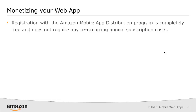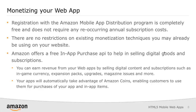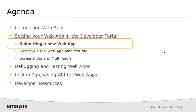You also have the ability to monetize your app through the in-app purchasing API. Registration for the Amazon mobile app distribution program is completely free — there's no charge to put your mobile web app in the app store. There are no restrictions on existing monetization techniques you may already be using. We offer a free in-app purchasing API that allows you to sell in-game currency, things like expansion packs, or subscriptions to magazines.